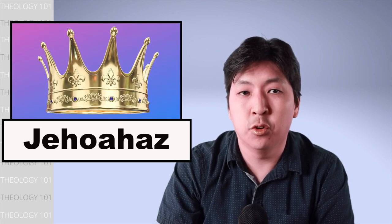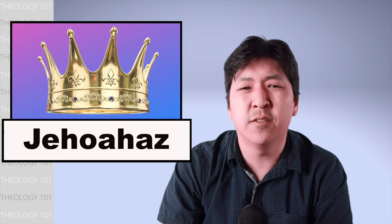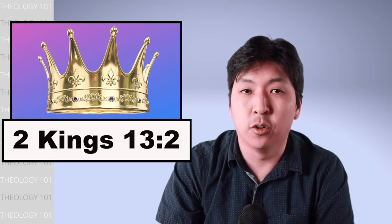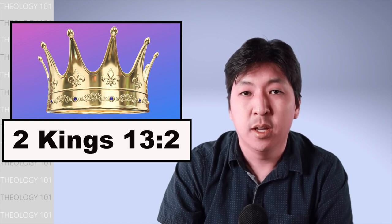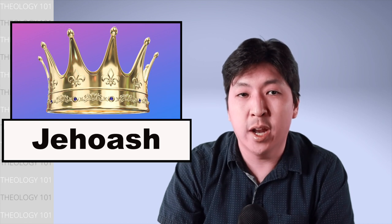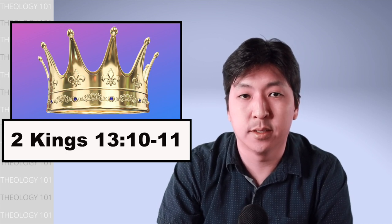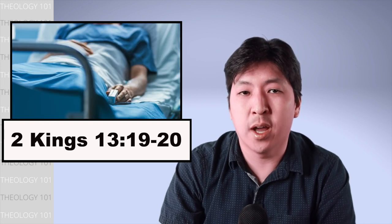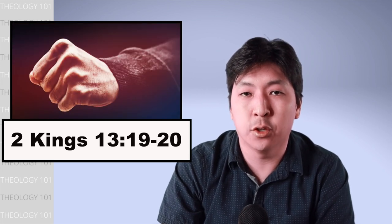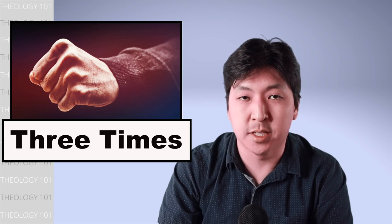While Joash reigned in Judah, Jehoahaz, the son of Jehu, began his reign in Israel for seventeen years, but he did what was evil in God's eyes. After him, his son Jehoash reigned in Israel for sixteen years, and he also did what was evil in God's eyes. Then we see Elisha get sick and prophesies to Joash that Israel will strike down Syria three times, and then he ends up passing away.